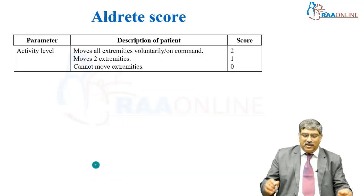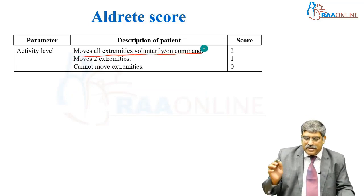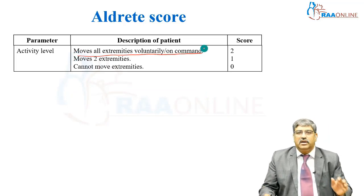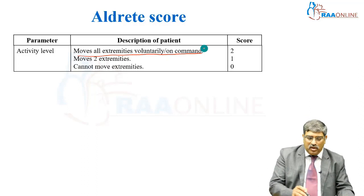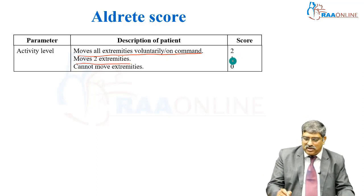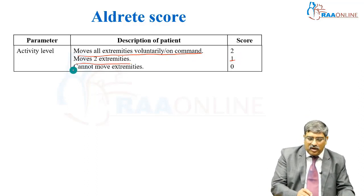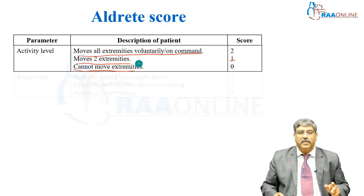For activity level: if the patient moves all extremities voluntarily or on command, the score is 2. If they move only two extremities, it is 1. If they cannot move extremities, it is 0.